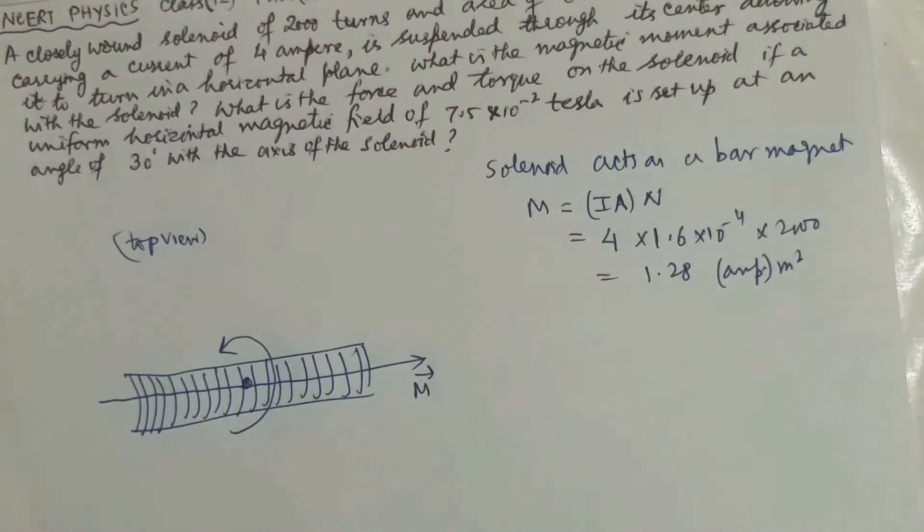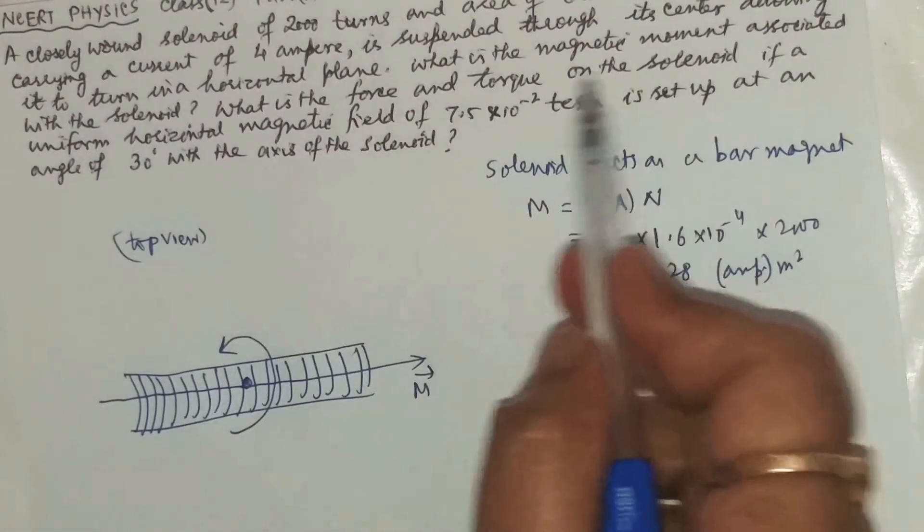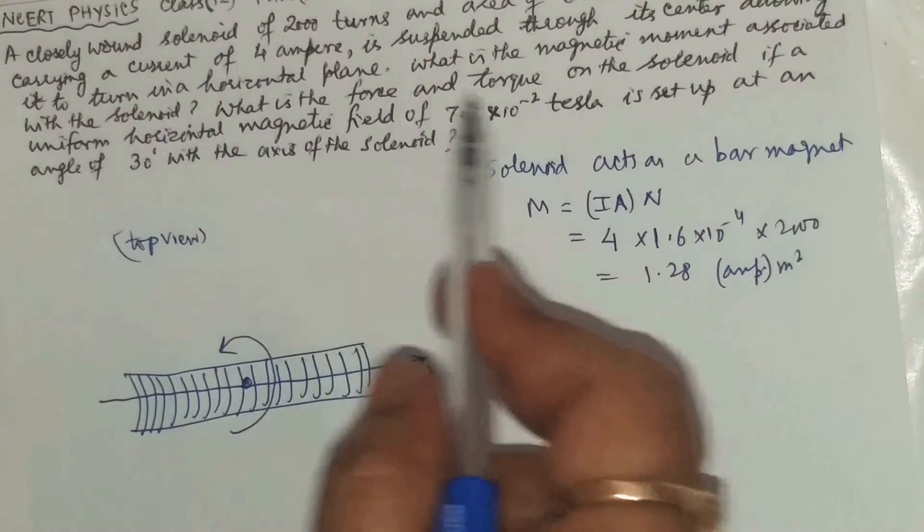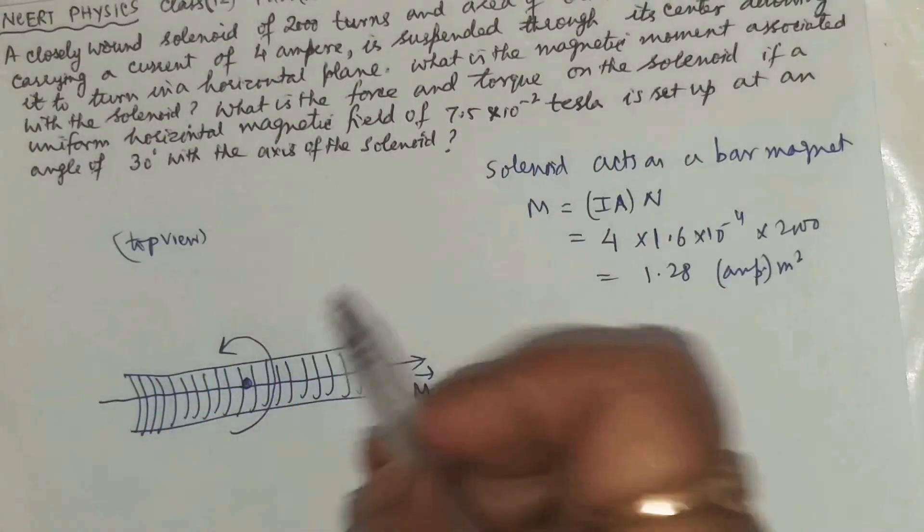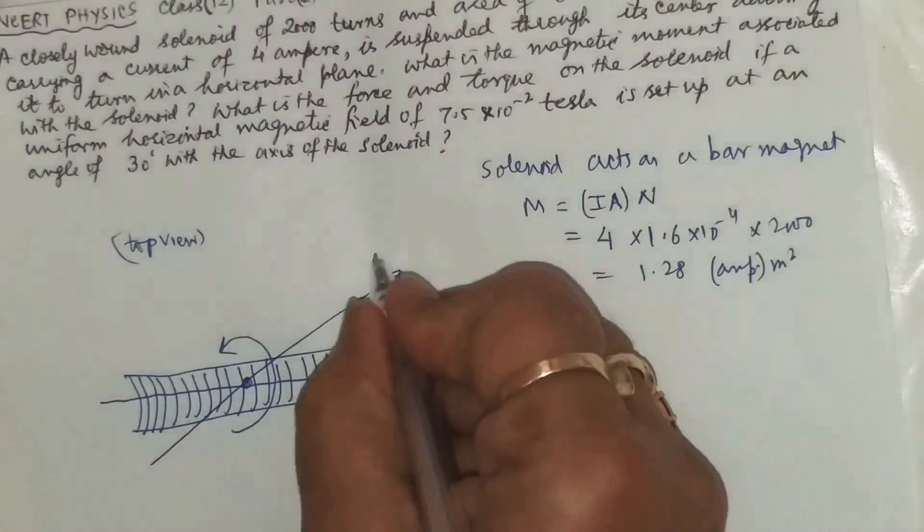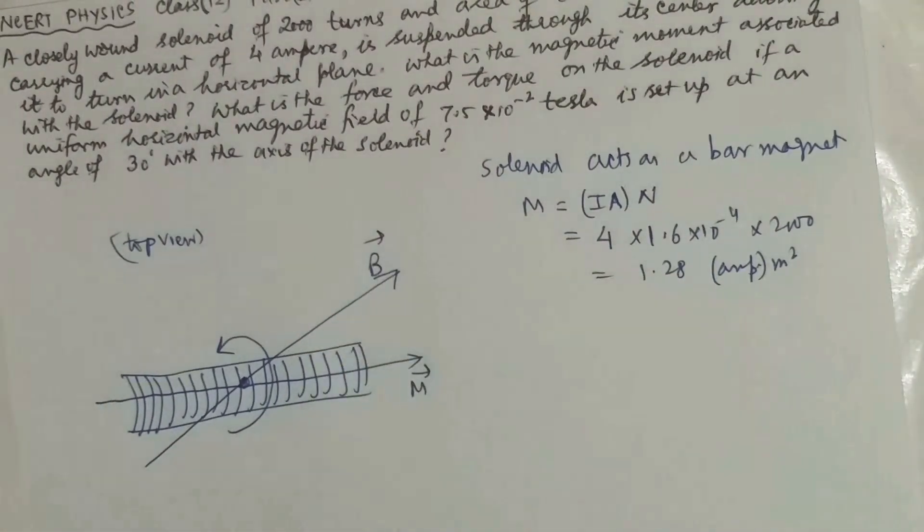This is the magnetic moment. Now it is placed in a magnetic field which is horizontal and the magnetic field makes an angle 30 degree with the axis of the solenoid. We are all taking the top view of this.